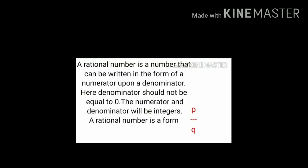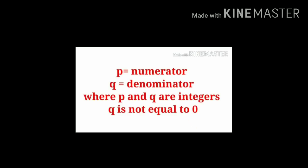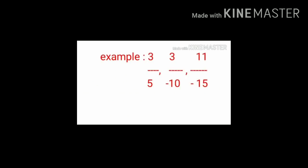Now let's see what is meant by rational number. A rational number is a number that can be written in the form of a numerator upon a denominator. Here, the denominator should not be equal to 0. The numerator and denominator will be integers. A rational number is in the form of P upon Q, where P equals numerator and Q equals denominator, and Q is not equal to 0. If the denominator is 0, that fraction is not called a rational number. If the denominator is negative, it is still called a rational number. Examples: 3 upon 5, 3 upon minus 10, 11 upon minus 15.